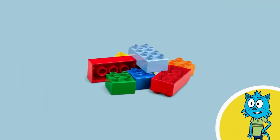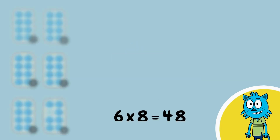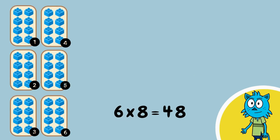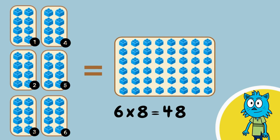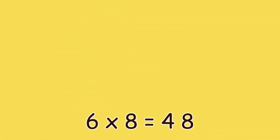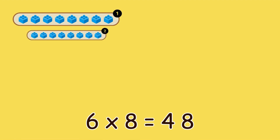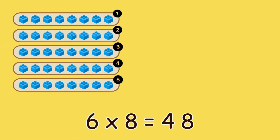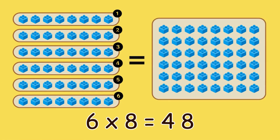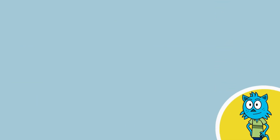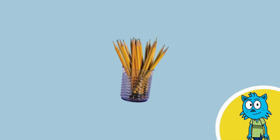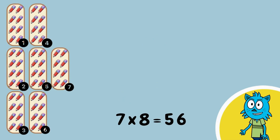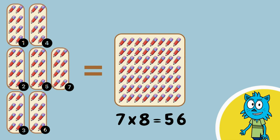Let's count some blocks. Six groups of eight blocks equals forty-eight blocks. Six times eight is forty-eight.